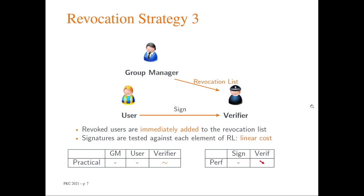The last revocation strategy is called Verifier Revocation List. The group manager can add specific tokens to a revocation list, and these tokens can be used by the verifier to check if a given signature was generated by one of the revoked users. The main advantage is that revoked users are immediately added to the revocation list. For users, it does not change anything — they produce their signatures as usual. The main drawback is that verification becomes very complex for large revocation lists, because for each revoked user the verifier must perform complex operations such as pairings.